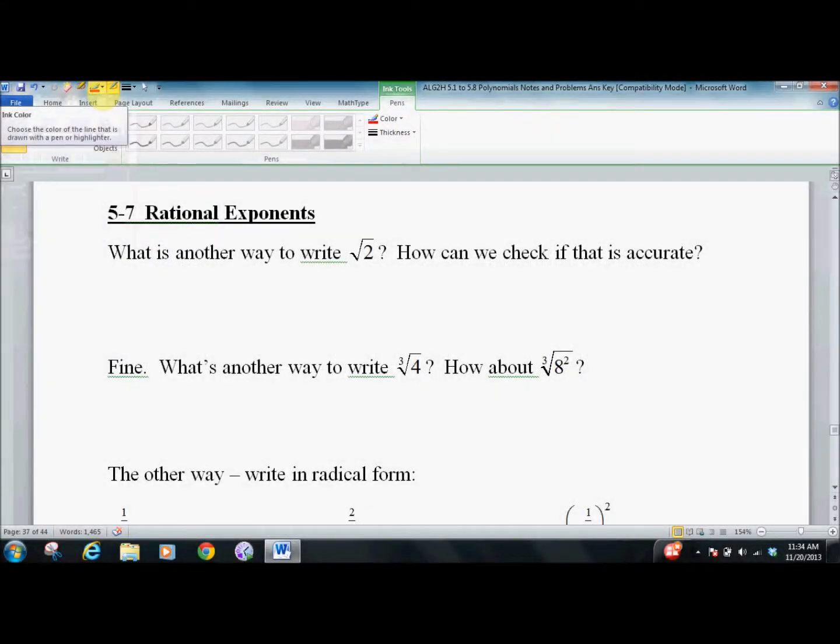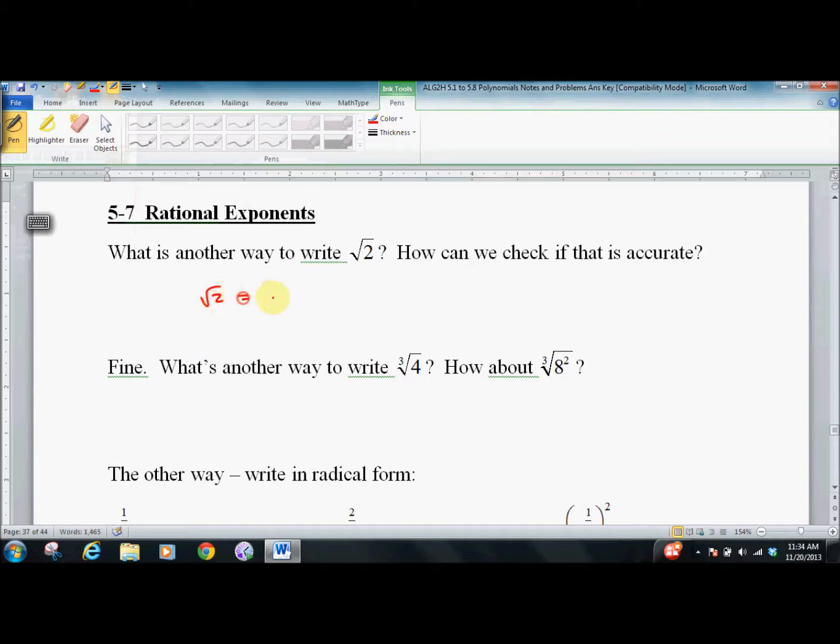Lesson 5.7: Rational Exponents. So this lesson builds on our lesson from yesterday. It moves quickly, so be prepared to hit the pause button as necessary. What's another way to write root 2? Well, we've talked about it. You could write that as a rational exponent. Remember, rational exponent, and it's the same thing, and you can check it on your calculator if you want.